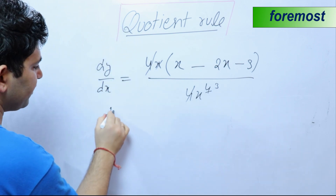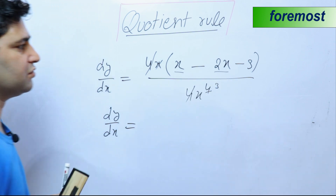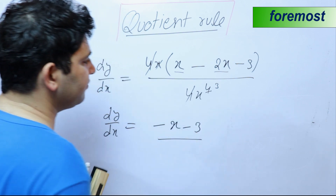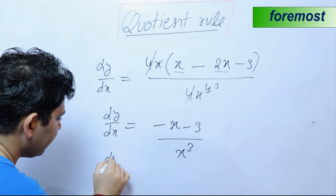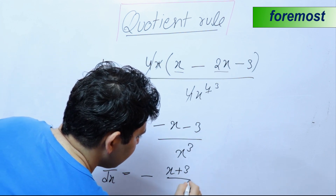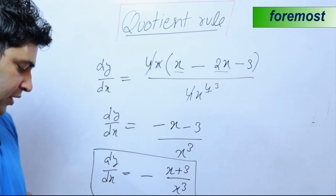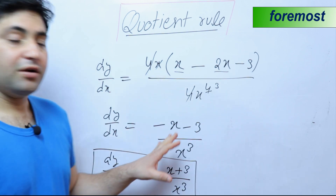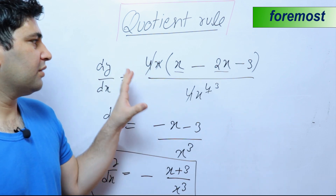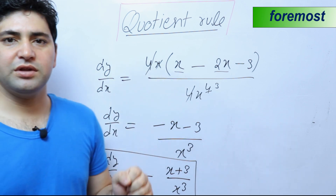So the final step gives us dy upon dx is equal to: x minus 2x leaves minus x, so we have minus x minus 3, divided by x cubed. Taking the minus common from the numerator, this becomes minus of x plus 3, upon x cubed. This is the final result for the quotient rule applied to this function. In this way, we can apply the quotient rule of differentiation. You can try more questions by taking examples from your book or anywhere you want. Thanks for watching this video.